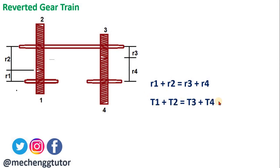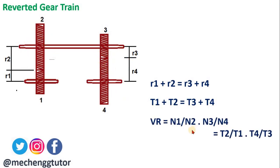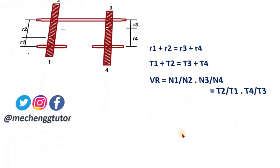Here T1, T2, T3, T4 are the number of teeth on gears 1, 2, 3, and 4 respectively. The velocity ratio for the reverted gear train is: (N1/N2) × (N3/N4) = (T2/T1) × (T4/T3). Since gears 2 and 3 are mounted on the same shaft, N2 = N3, so they cancel, giving N1/N4 = (T2/T1) × (T4/T3).